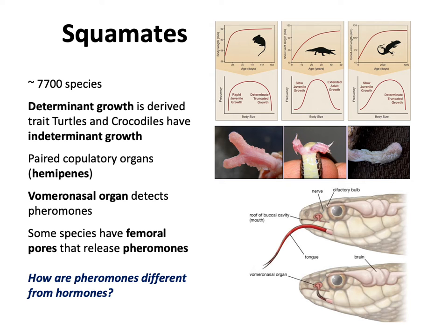Another characteristic of squamates: they have paired copulatory organs called hemipenes, which literally stick out like a Y outside of the cloaca. It's a two-pronged male copulatory organ — a two-pronged penis, if you will.